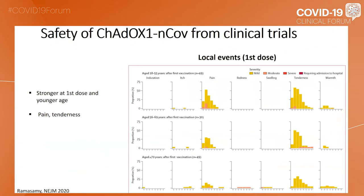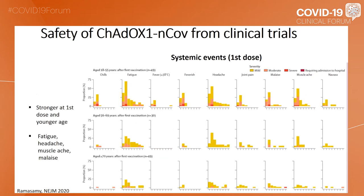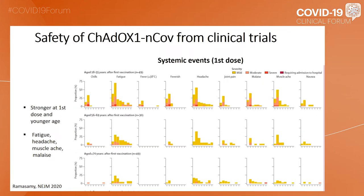The safety of Vaxzevria from clinical trials is shown on this slide, especially the local events at the first dose. Because opposite to the messenger RNA vaccines, this vaccine triggers side effects more with the first dose than the second dose, and the side effects are more noted at younger age. The main local events are pain and tenderness. Regarding systemic events, those were also stronger at the first dose and in younger subjects, and consisted mainly of fatigue, headache, muscle ache, and malaise. The short-term tolerability was pretty good with this vaccine.